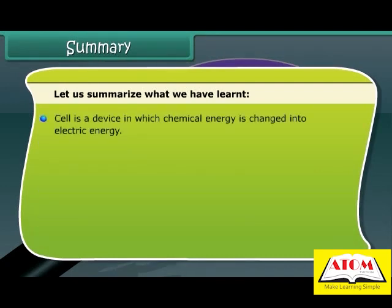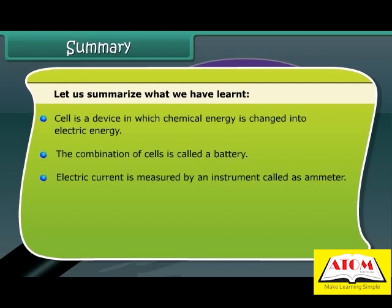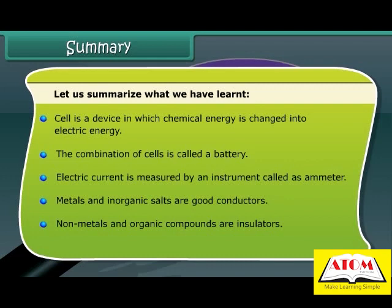A cell is a device in which chemical energy is changed into electric energy. The combination of cells is called a battery. Electric current is measured by an instrument called an ammeter. Metals and inorganic salts are good conductors. Non-metals and organic compounds are insulators.